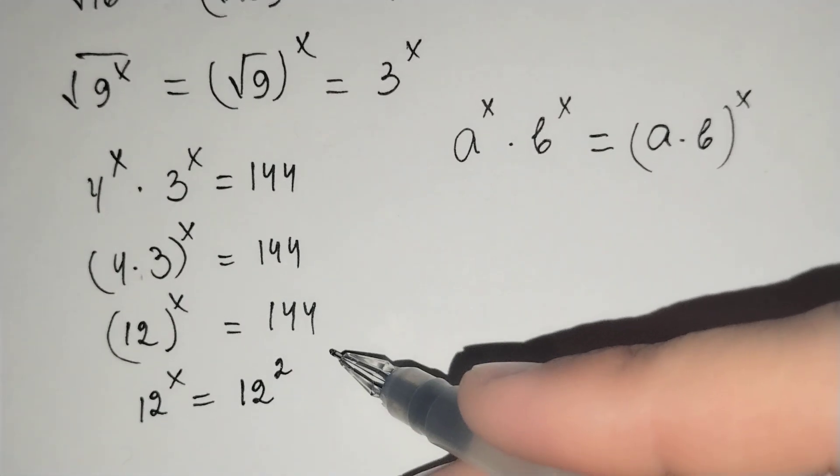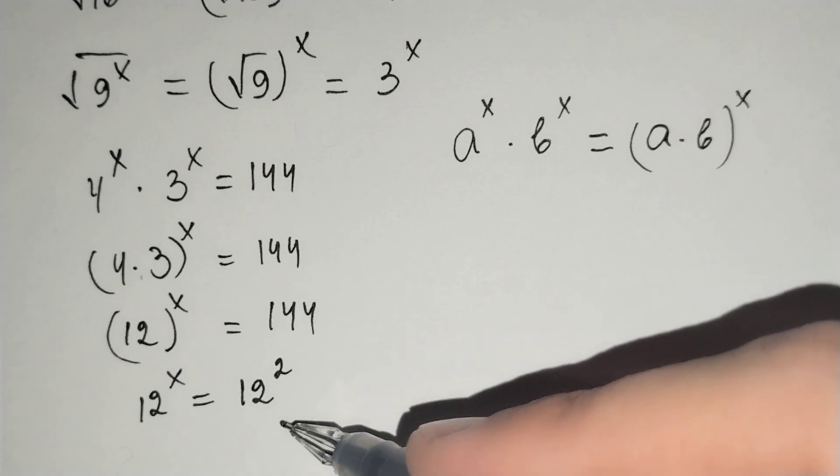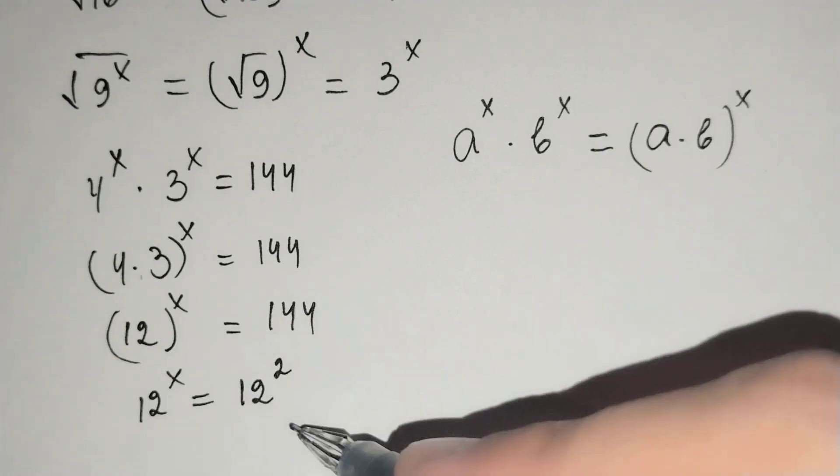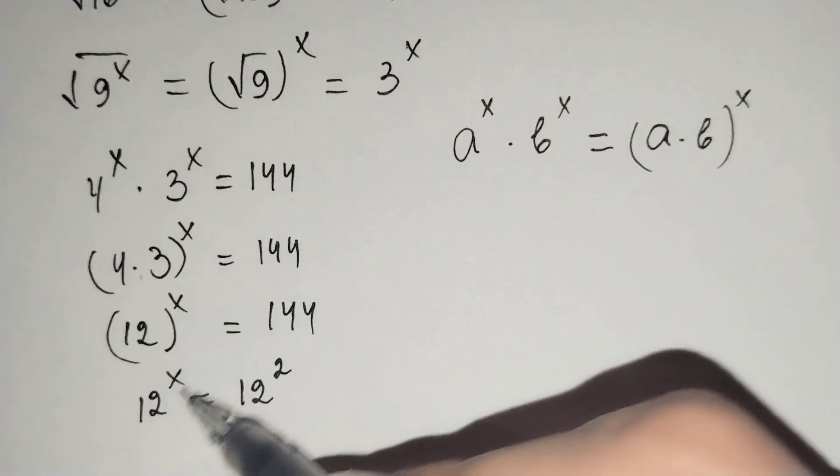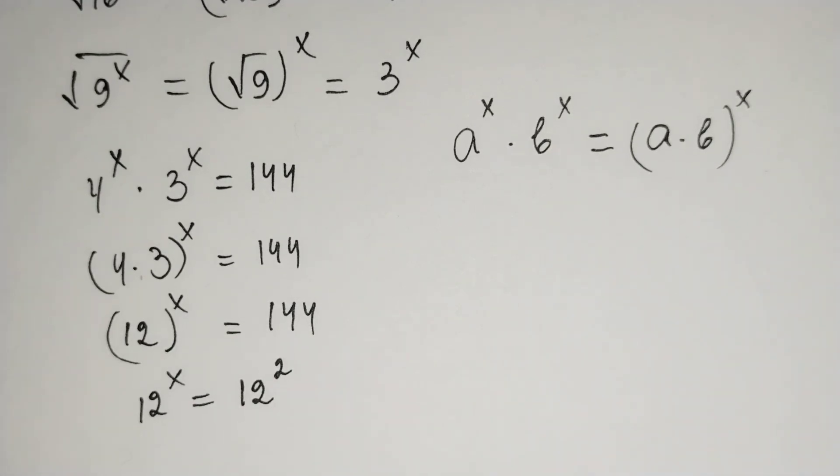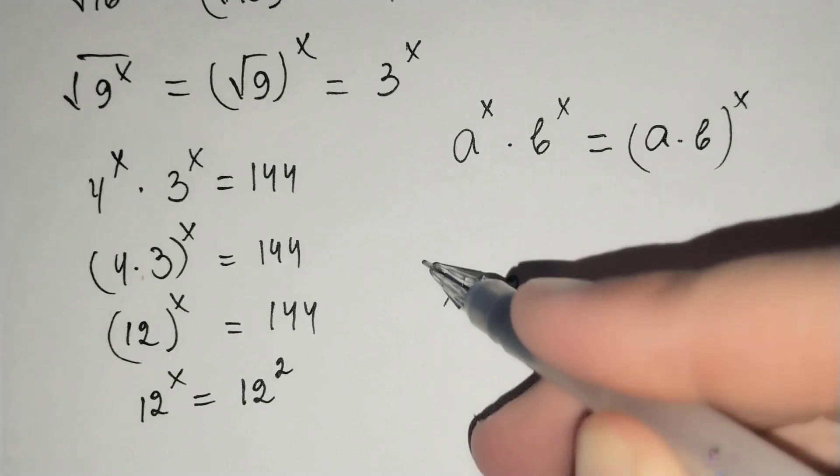We know that 144 equals to 12 squared. And from here, the bases are the same, that's why exponents should be equal and x equals to 2.